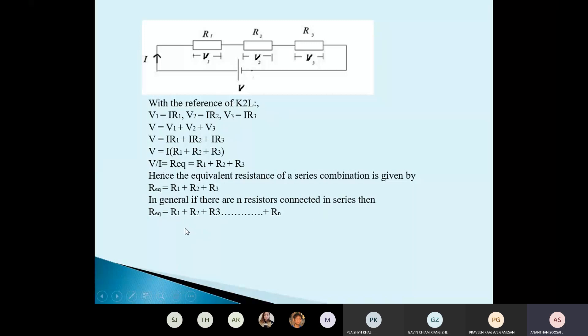In general, if there are N resistors, you can get N resistors to find the total resistance law.